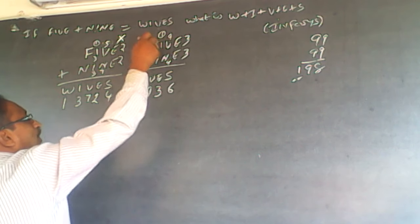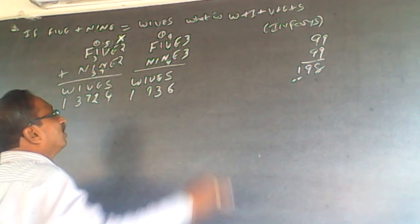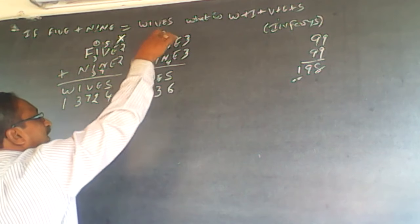So even plus odd will become odd. Therefore, V has to be odd in case there is a carry over.